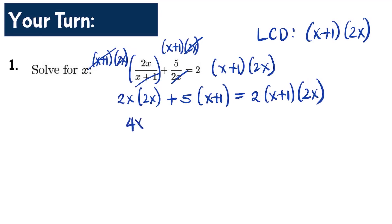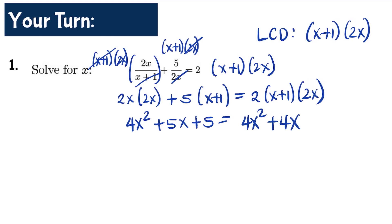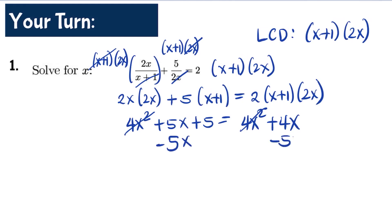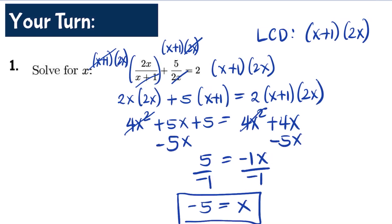2x times 2x is 4x². Five times (x+1) is 5x+5. On the right: 2 times 2x is 4x, times (x+1) gives 4x²+4x. The 4x² terms cancel on both sides. Subtracting 5x from both sides: 5 = 4x - 5x = -x. Dividing both sides by -1, x = -5. Since -5 does not make any denominator zero, it is not an extraneous solution.